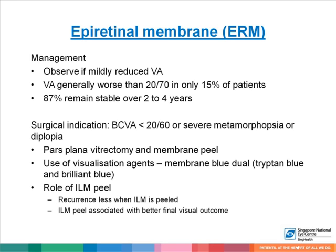Epiretinal membrane should be observed if vision is only mildly reduced. Vision is generally worse than 20/70 in only 15% of patients, and 87% remain stable over 2 to 4 years. Surgical indications include best corrected vision less than 20/60, severe metamorphopsia, or diplopia — in which case a pars plana vitrectomy and membrane peel is performed. Visualization agents may be used to stain the ERM during the procedure. ILM peel reduces recurrence and has been associated with better final visual outcomes.